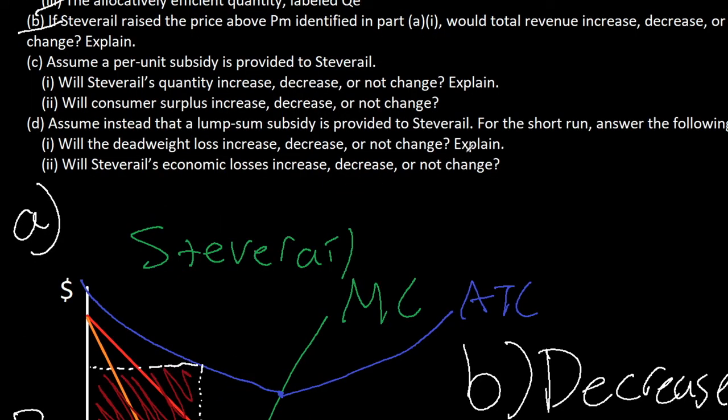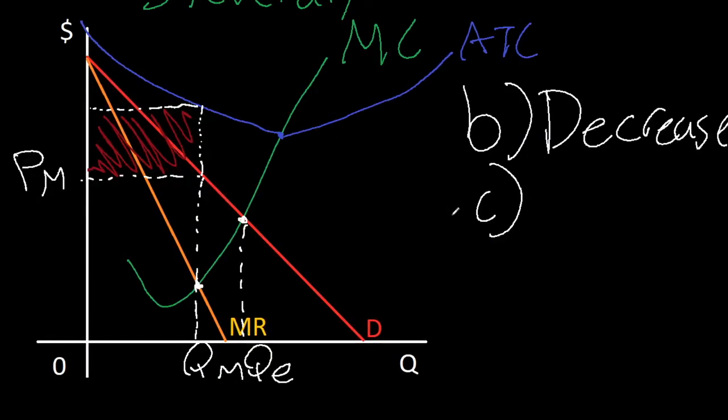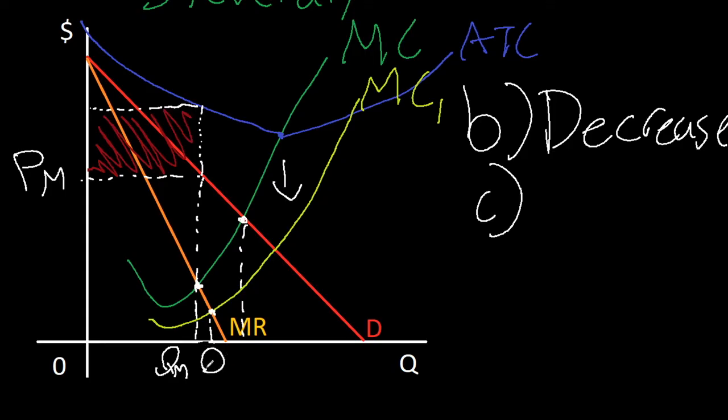Now we're approaching the subsidy section. Part C asks about the effects of a per unit subsidy on quantity and consumer surplus. First we need to draw in the per unit subsidy. We must remember that per unit subsidy affects MC and ATC and makes them go downwards. The costs are now lower because of the subsidy. So we can shift marginal cost downward. We can draw in our new marginal cost curve, here's our MC1. We have to indicate the 1 since it's the new one. MC meets MR is the loss minimizing quantity, and the quantity has now shifted to the right.